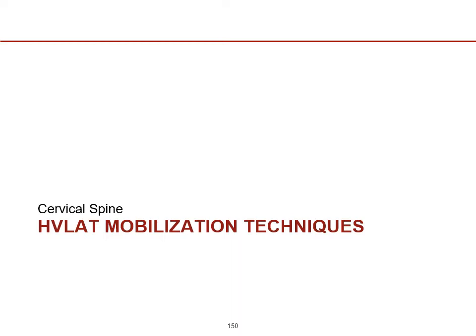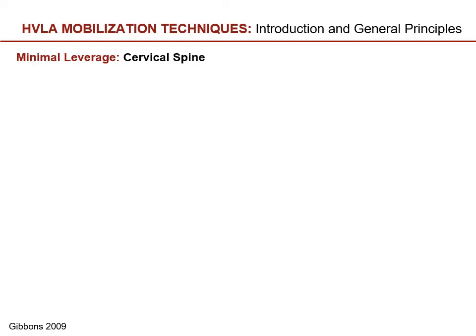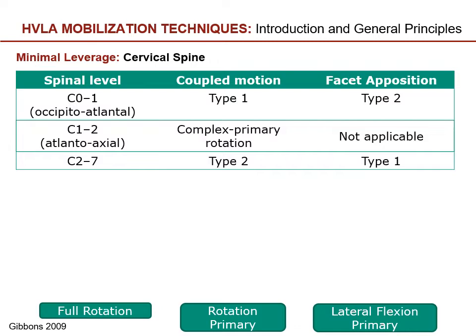In this next section we'll talk about the specific techniques for the cervical spine. When thinking about minimal leverage positioning for the cervical spine, we'll talk about each of the different segments and review concepts from the pre-lecture material. In the first column you have your spinal levels C0, C1, C1-C2, and C2 through C7 representing the lower cervical spine. The middle column labels the natural coupled motions that occur with each of these spinal segment regions.